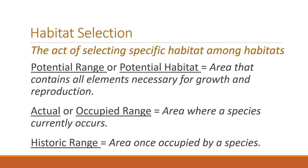Now that we know the four elements of habitat, the next step is to think about where animals actually reside and carry out their lives — that's an aspect of habitat selection. Habitat selection is the act of selecting a specific habitat or space among all habitats available. The potential range or potential habitat is the area that contains all elements necessary for growth and reproduction — it doesn't mean animals actually live there, just that the food, water, space, and cover resources are present. The occupied range is where animals actually currently exist. The historic range is the area they once occupied.